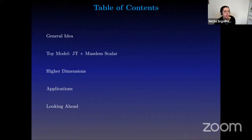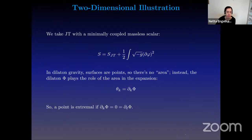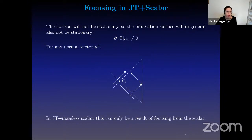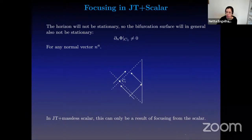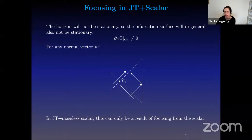Let me move on to the toy model of JT gravity plus a massless scalar. We're going to take JT with a minimally coupled massless scalar, and in dilaton gravity surfaces are points. You might wonder what area means — there's no area. Instead we just use the dilaton value. The expansion is given as a derivative of the dilaton, so a point is extremal if the derivative of the dilaton in both null directions is zero. In JT plus the scalar, the horizon is not going to be generically stationary, so the bifurcation surface will also not be stationary, meaning it is not going to be extremal. In the particular case of a minimally coupled massless scalar, this can only be the result of focusing from the scalar — there are no gravitons to worry about, or shear or anything like that. It's just going to be the scalar. This is a massless scalar, so we just have the right movers and the left movers.